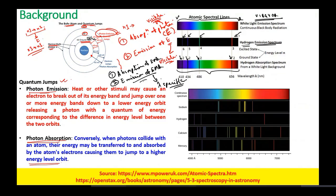Wavelength is basically related with energy: E = hν = hc/λ. Wavelength will decide how much energy is required, whether it is being absorbed or emitted from a specific absorption or emission process.